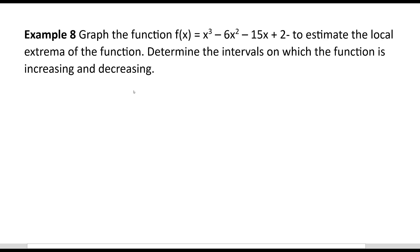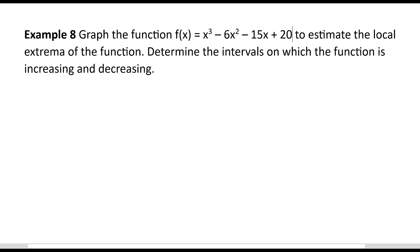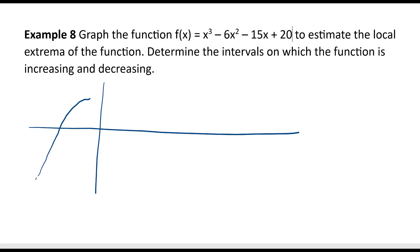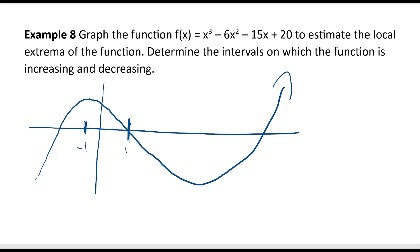This problem asks us to graph the function f(x) = x³ - 6x² - 15x + 20 — there was a typo; the constant is actually 20 — and to estimate the local extrema and determine the intervals on which the function is increasing and decreasing. The graph peaks right about x = negative 1, then comes down and comes back up. It bottoms out at about x = 5. So the local maximum point is at (-1, 28) and the local minimum point is at (5, -80), though the graph is not drawn to scale.